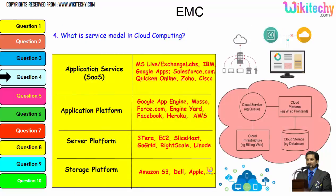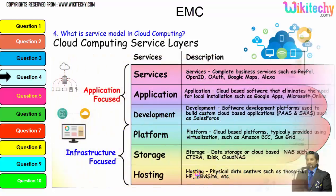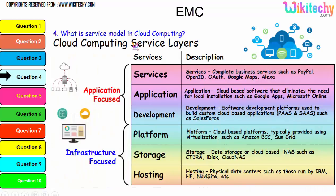Digging further into service models: the application service, application platform, and server platform are distinct layers. The storage platform is provided by Amazon S3, Dell, and Apple. The important service layers are: services, application, development, platform, storage, and hosting - with typical examples under each. These are important services commonly asked about in cloud computing interviews.